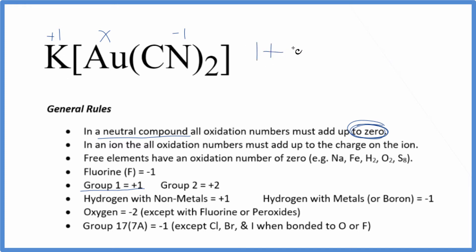We can say 1 + X for the gold (we don't know that) + 2 times -1 (that's -2), equals zero. So X - 1 = 0. Add 1 to both sides, X equals +1.